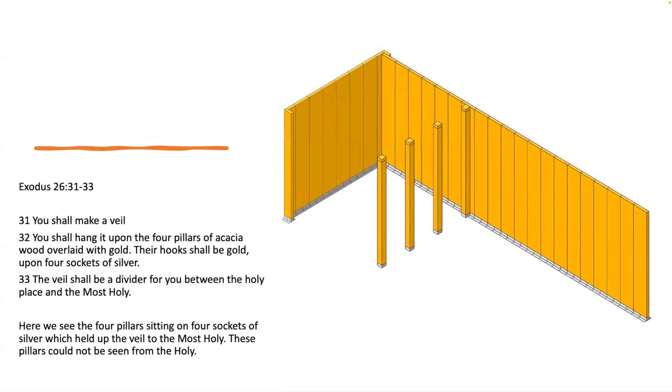Exodus 26:31-33: 'You shall make a veil. You shall hang it upon the four pillars of acacia wood overlaid with gold. Their hooks shall be gold upon four sockets of silver. The veil shall be a divider for you between the holy place and the Most Holy.' Here we see the four pillars sitting on four sockets of silver, which held up the veil of the Most Holy.